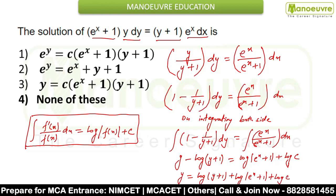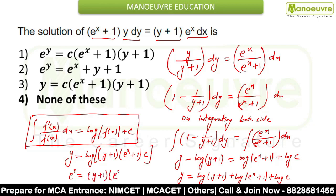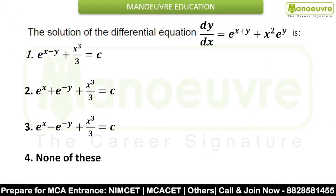When you solve this, you get y = log[(y+1)(e^x + 1)] + log C, which simplifies to y = log[(y+1)(e^x + 1)·C]. Or you can write e^y = (y+1)(e^x + 1)·C. Comparing with the options, the first one is the correct answer. Let's move to the next question.